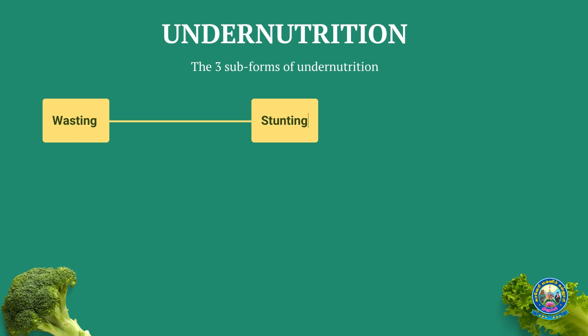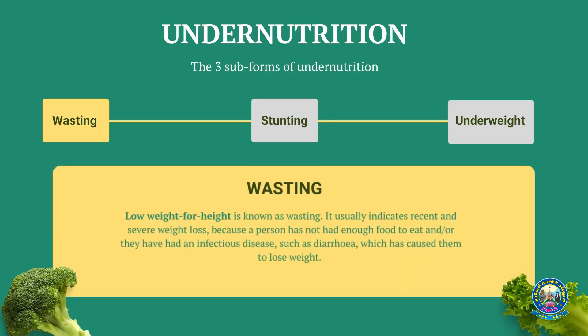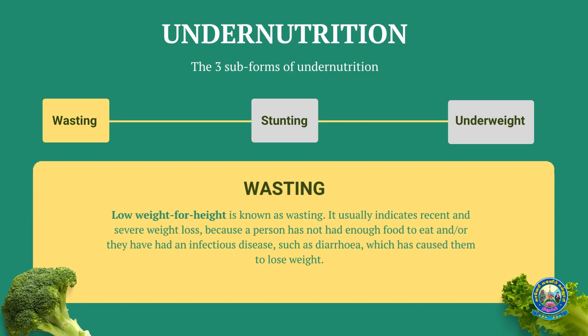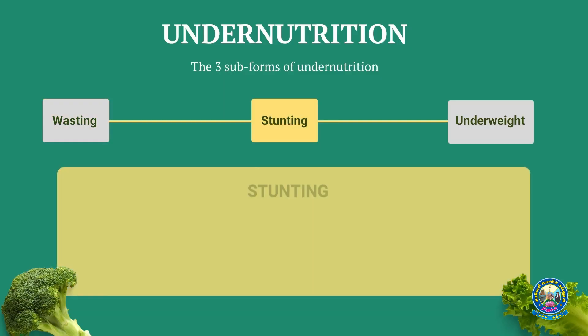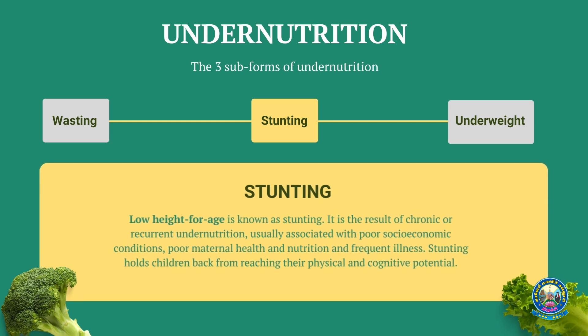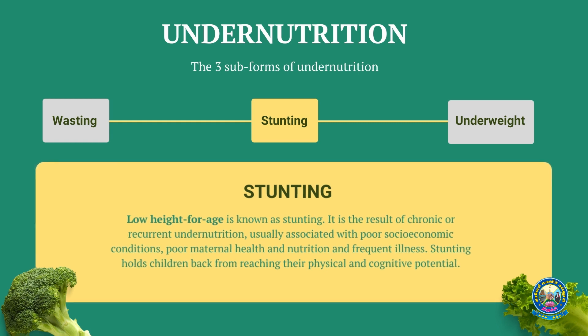Let us see about undernutrition. There are three sub-forms: wasting, stunting, and underweight. Wasting is low weight for height, usually due to dietary inadequacy and infectious diseases such as diarrhea, which cause weight loss. Stunting is low height for age, caused by dietary inadequacies, poor maternal health and nutrition, and infectious diseases. Stunting not only holds children back from reaching their physical potential, it also affects their cognitive potential.